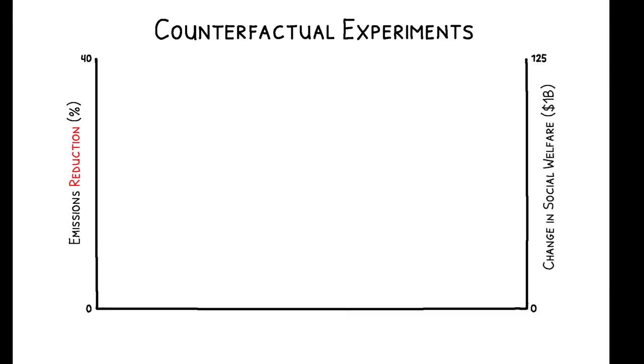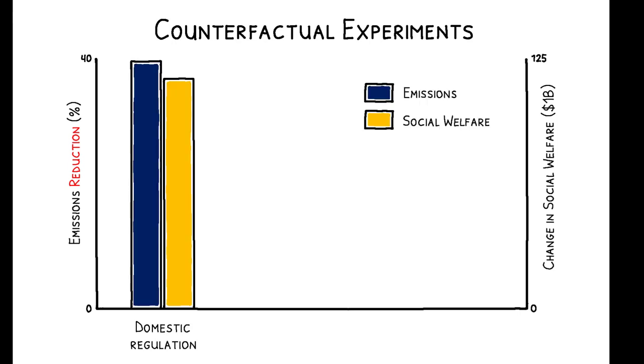This plot shows the estimated effects of each policy. The model predicts that domestic regulation would reduce emissions by 40% and increase social welfare by $115 billion.